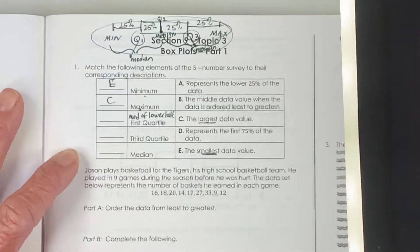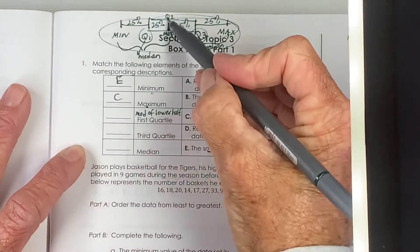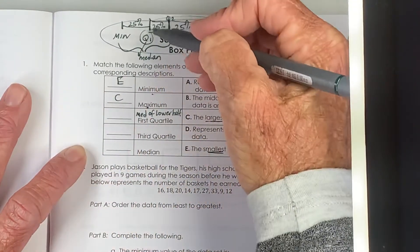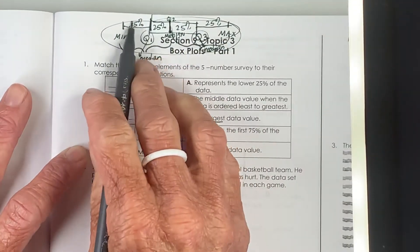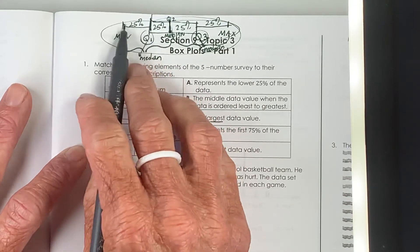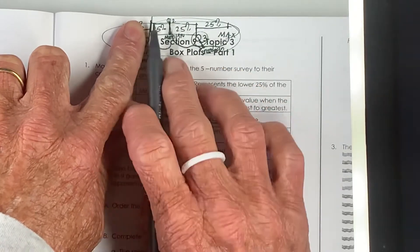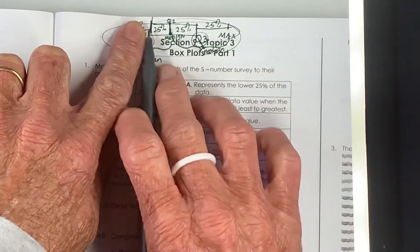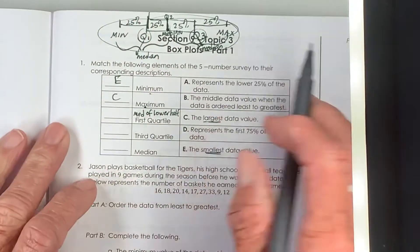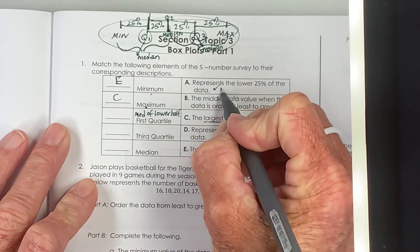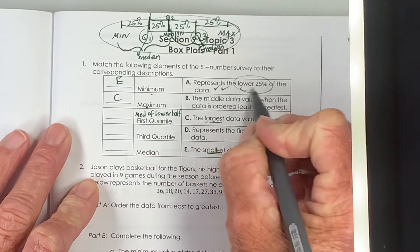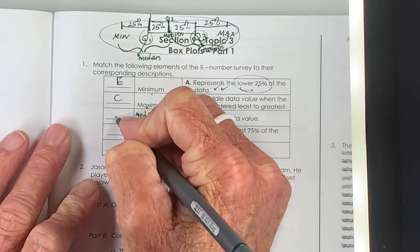And it is our divider. The lowest 25% of the data is between it and the minimum. The upper 75% of the data is also above it. So that's a couple of different ways to look at it. But in this case we're going to say it represents the lowest 25% of our data.